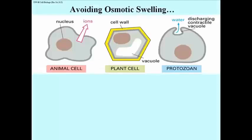Here are some coping mechanisms that cells have to deal with osmotic swelling. Animal cells can expel ions through membrane proteins that facilitate their discharge. Plant cells of course have a cell wall which prevents the cell from swelling beyond a certain point. And many protozoa — single-celled organisms that live in lakes and streams — actually have little contractile vacuoles that will discharge water that would otherwise continue to accumulate and cause the cell to burst.